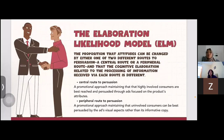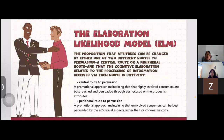Next is the elaboration likelihood model, or ELM — the proposition that attitudes can be changed by either one of two different routes to persuasion: a central route or a peripheral route, and that the cognitive elaboration related to the processing of information received via each route is different.